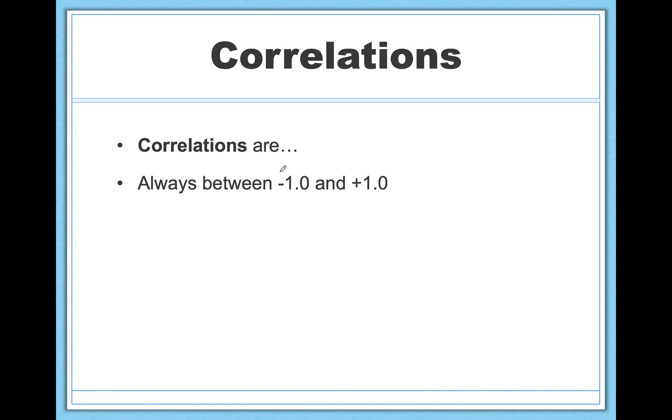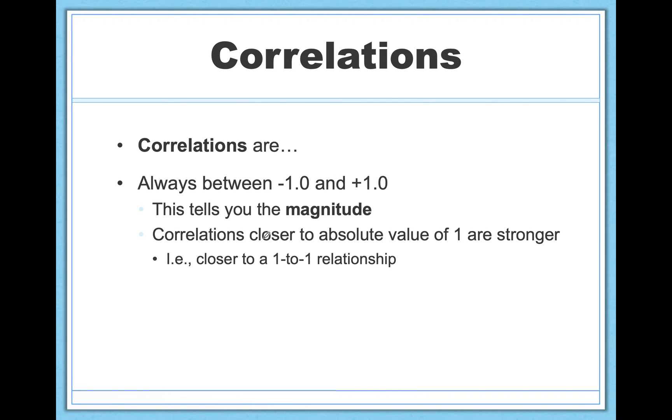So correlations are always going to be between negative one and one. And this value tells you not only the valence, not only the sign, but it also tells you how strong this relationship is. And here's how you can know. Correlations that are closer to an absolute value of one are stronger. So if you find something like 0.96 or negative 0.7, or something as close to an absolute value of one as possible, this is a strong relationship that we're talking about here.